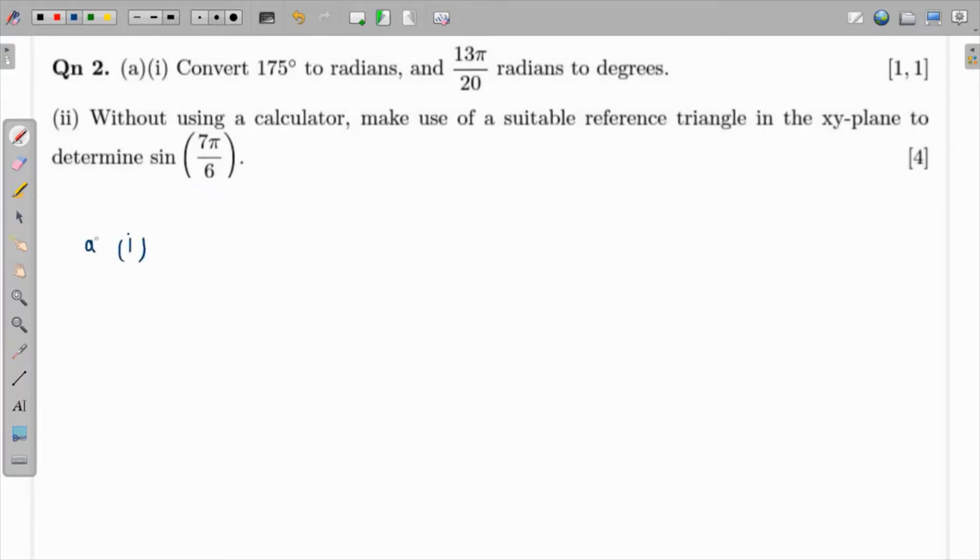For part (a)(i), we know that to convert degrees to radians, 1 degree equals π/180 radians. This means 175 degrees will be 175 × π/180, which simplifies to 35π/36.